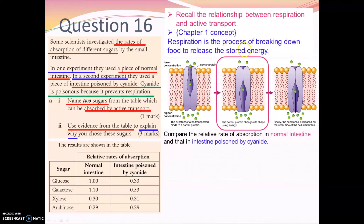Active transport — referring to the diagram in your textbook — uses energy to carry out transport. One use of this energy is to change the shape of the carrier protein or channel protein to transport substances against the concentration gradient or along the concentration gradient across the cell membrane.